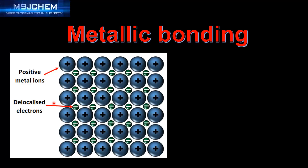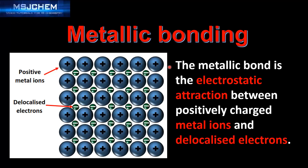Delocalized electrons are electrons that are not associated with any one atom; therefore they are free to move around the metallic structure. The metallic bond can be defined as the electrostatic attraction between positively charged metal ions and delocalized electrons.